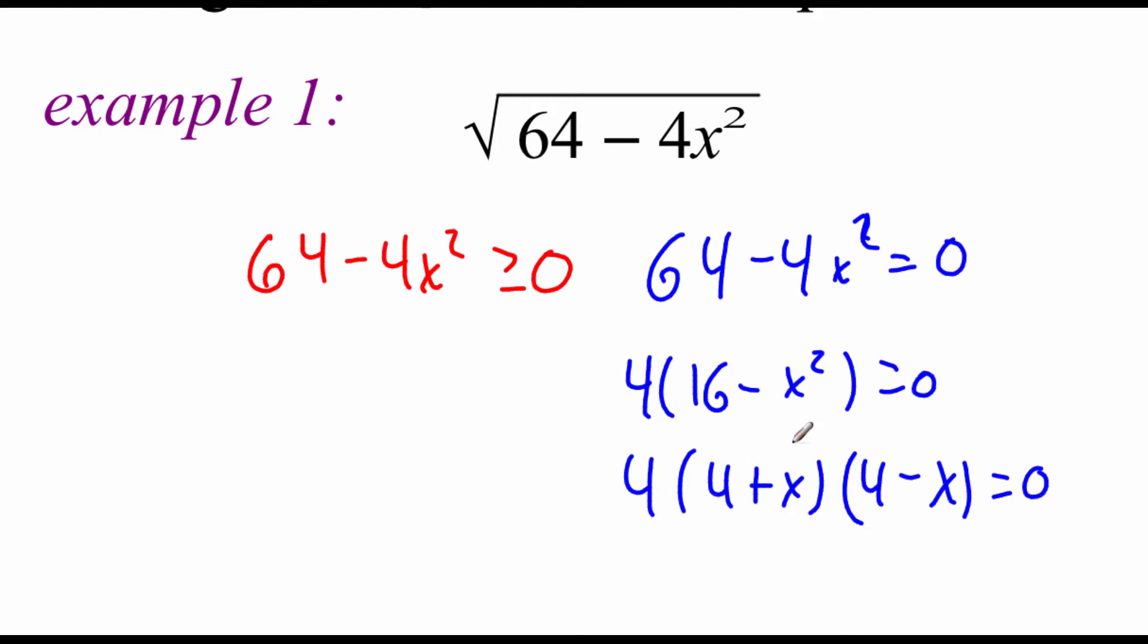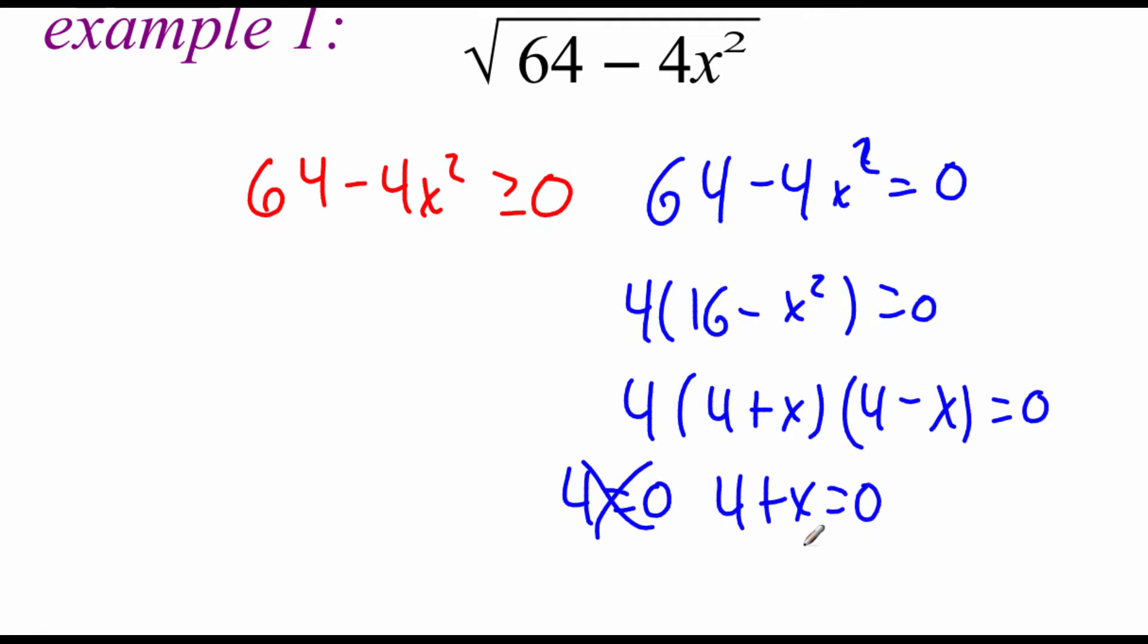Now, to find the zeros, we're going to take each factor and set it equal to zero. So we've got 4 equals zero, but 4 equals zero doesn't make a whole lot of sense, so I'm just going to ignore that. If we take 4 plus x equals zero, we would solve that by subtracting the 4 over to the other side, so we get x equals negative 4. If we take this 4 minus x and set it equal to zero, I think I would just add the x over to the other side, so then we would get x equals 4. So those are going to be our critical numbers, 4 and negative 4.